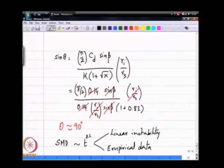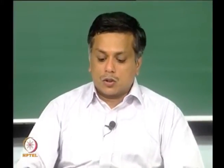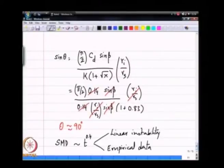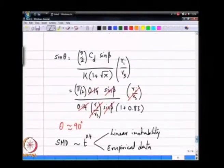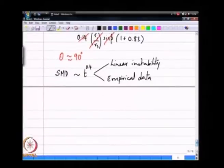We said we were also able to relate the SMD to the film thickness. This can be done either through linear instability analysis we looked at ways of doing this or through empirical data. The empirical data path has shown that you can find the SMD to approximately scale as t power 0.4.